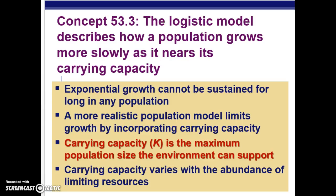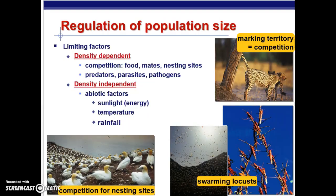The logistic model describes how a population grows more slowly the closer it gets to its carrying capacity K, which is the maximum population size the environment can support. This is the more realistic model we usually see in nature. The K value varies with the abundance of the limiting resources, which are called K-selected resources or K factors.